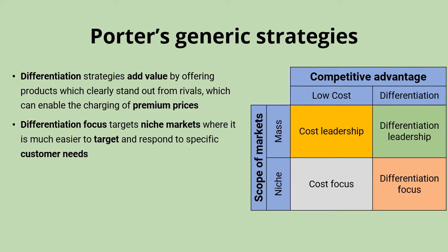Starting with the bottom right of the matrix, we can think about how differentiation could be focused on niche markets, because that's probably going to be the easier of the two differentiation strategies. We're able to target and respond to specific customer needs within that subgroup of the larger market, and it's probably easier to stand out when you can really get to know your customers and focus on their specific needs.